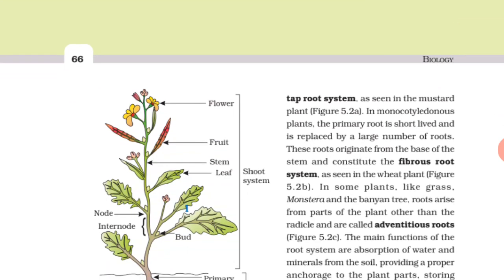In monocotyledon plants, the primary root is short-lived and is replaced by a large number of roots. These roots originate from the base of the stem and constitute the fibrous root system, as seen in wheat plant. In some plants like grass, monstera, and the banyan tree, roots arise from parts of the plant other than the radicle and are called adventitious roots.